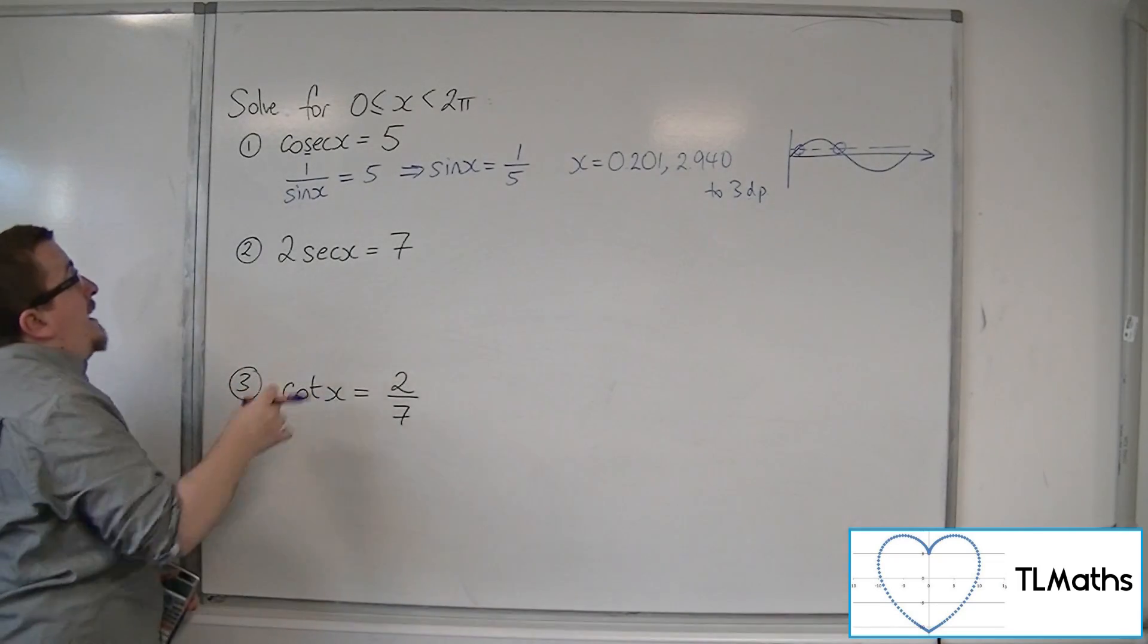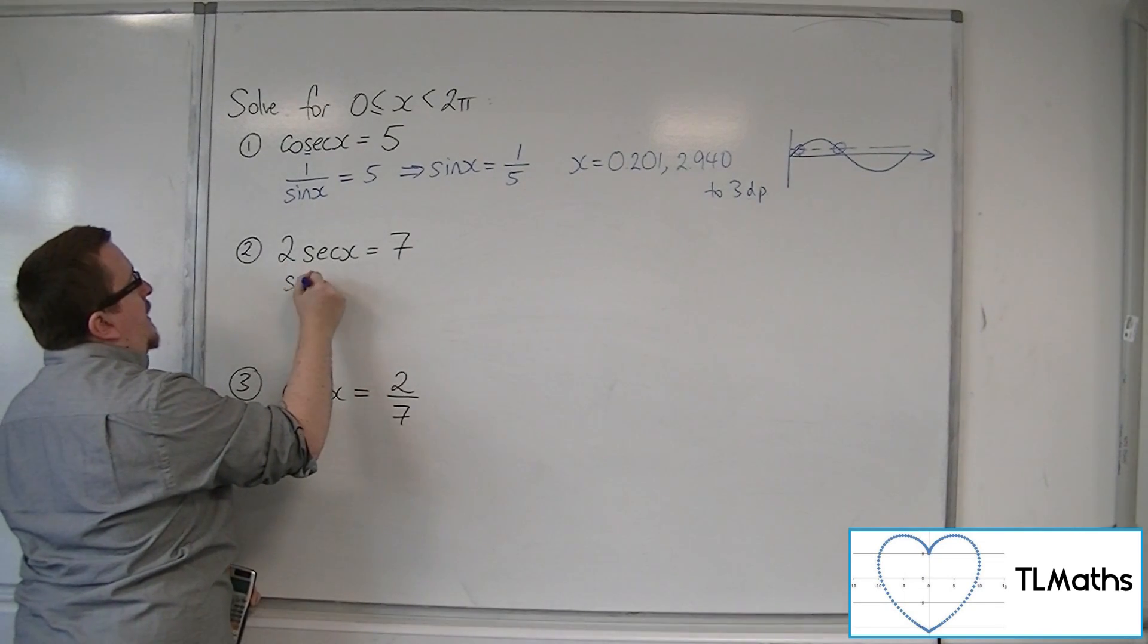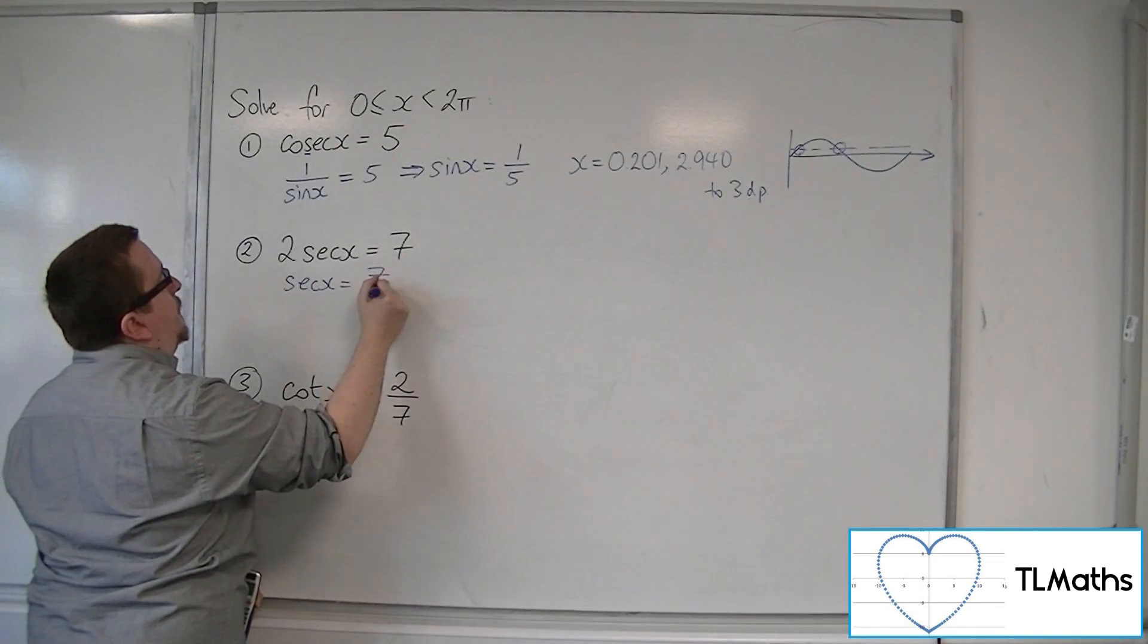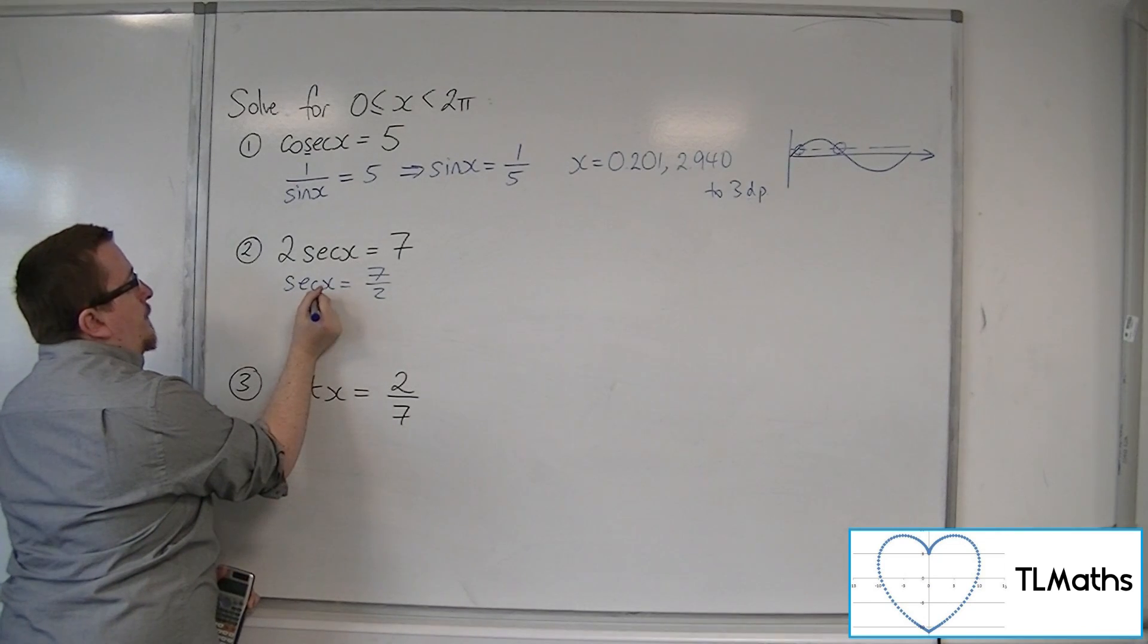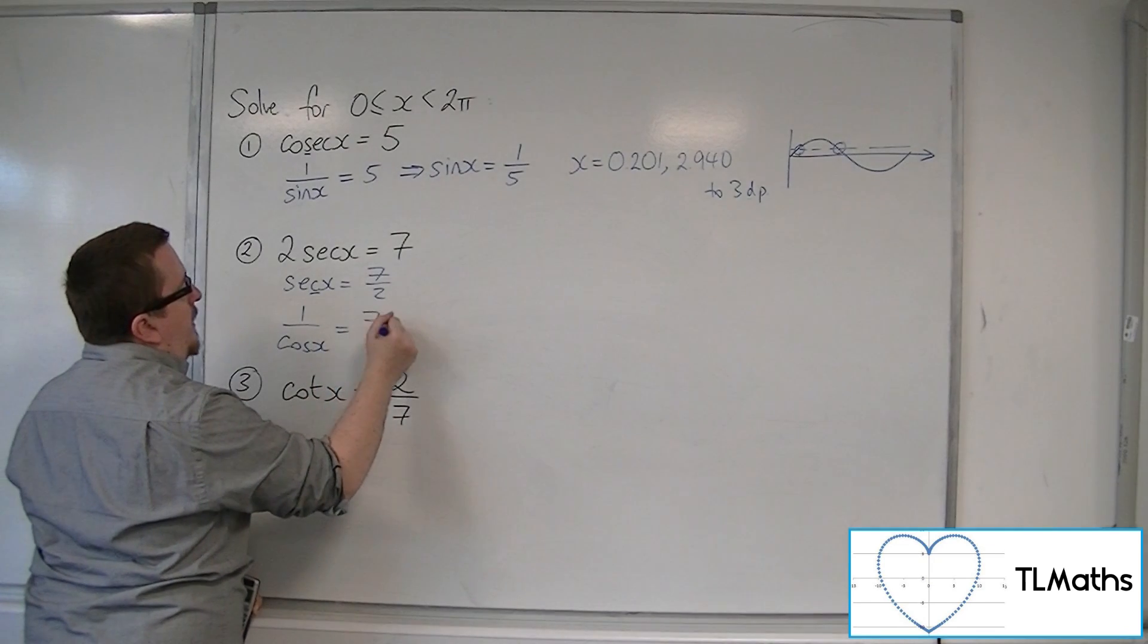Number 2, 2 sec x is equal to 7. Well, we're going to first divide through by 2. So we get sec x is equal to 7 halves. Sec, third letter rule, is 1 over cos. So 1 over cos is equal to 7 halves.